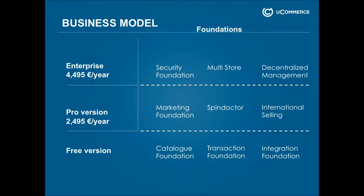We also have a partner program which gives you unlimited access to pro licenses. When you pay the gold partner fee, you can use as many pro editions as you want within a 12-month period. For example, if you do four sites in a year, you only pay upfront for the first two — the last two are free. In the second year, if you do another four sites, you're still only paying for those original first two. The last six are free. So it becomes an increasingly good business to be a gold partner. Two pros equals gold.